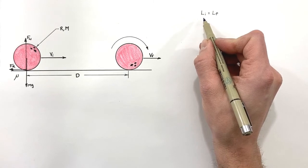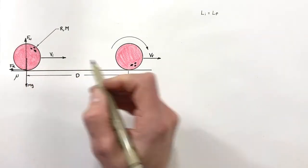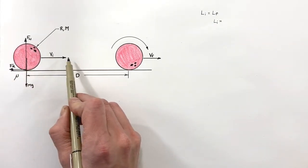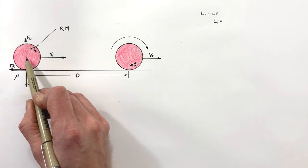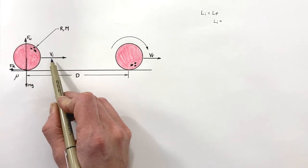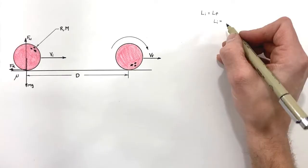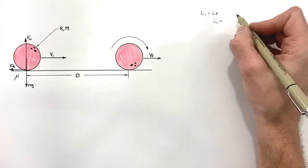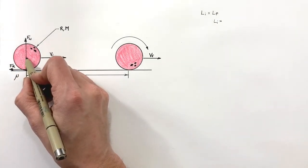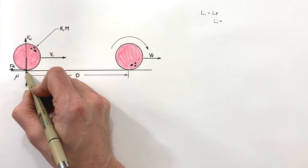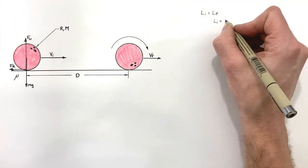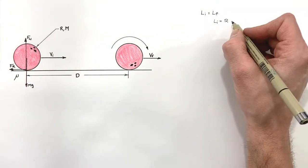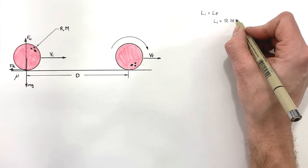First let's look at the initial angular momentum when the ball is simply translating. When the ball first contacts the ground it's not rotating yet — it is only translating — so we can look at this ball as though it is simply a particle moving along at some initial velocity v_i. The angular momentum is the radius R — the distance from the center of mass of the ball to the contact point — multiplied by its linear momentum m·v_i.